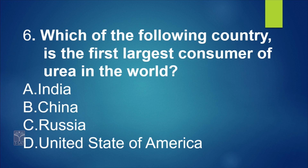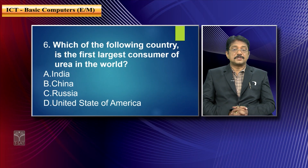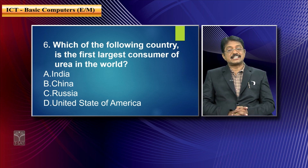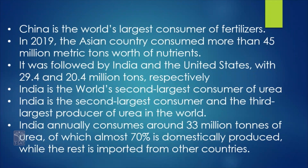Another examination question: 'Which of the following countries is the first largest consumer of urea in the world?' Options are India, China, Russia, United States of America. China is the world's largest consumer of fertilizers, so option B — China — is correct. In 2019, China consumed more than 45 million metric tons of nutrients. It was followed by India with 29.4 billion tons and the United States with 20.4 billion tons. So China is first, India is second, and the United States is third in urea consumption.